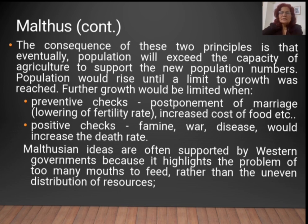Growth would be limited by two types of checks. Preventive checks include postponement of marriage, lowering of fertility rate, and increased cost of food. Positive checks such as famine, war, and disease would increase the death rate. These are the checks that take place — positive checks and negative checks.